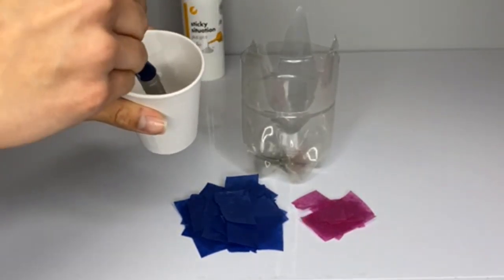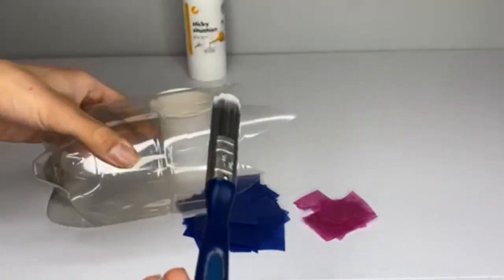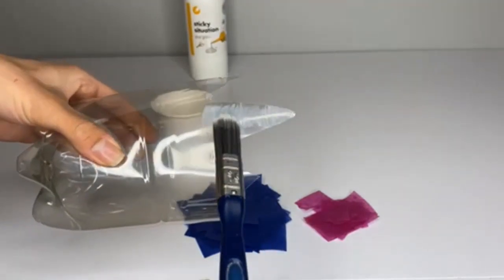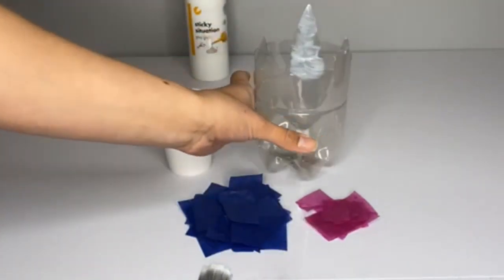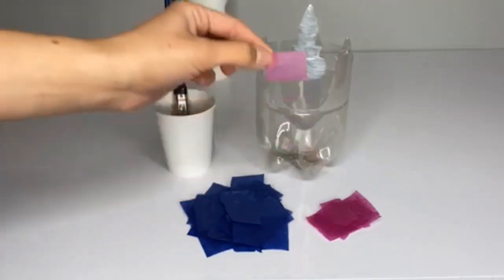To apply the tissue paper onto the bottle, you will need to take some PVA glue onto your brush and then apply a thin layer over the bottle. Then, all you need to do is take pieces of the tissue paper and apply these over where you place the glue.